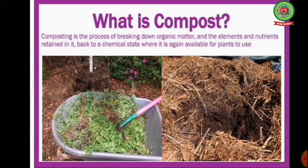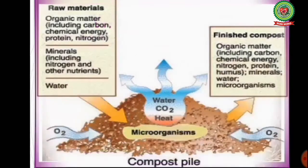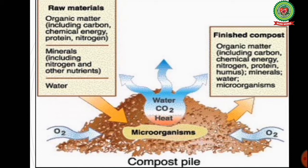The next step in processing waste is composting. Composting is the process of breaking down organic matter so that the elements and nutrients retained in it are returned to a chemical state where they are again available for plants to use. The raw materials include organic matter containing carbon, energy, protein, and nitrogen, along with minerals and water. With the action of water, carbon dioxide and heat, organic matter including carbon, energy, nitrogen, protein, humus, minerals, water and microorganisms are obtained as the final product.